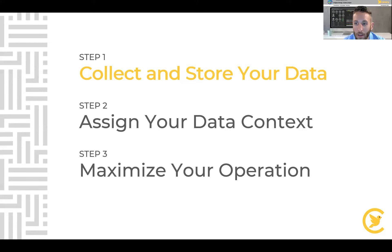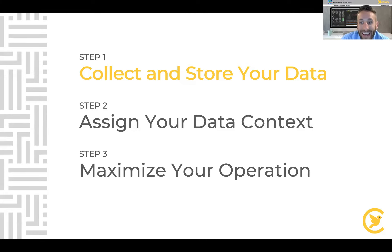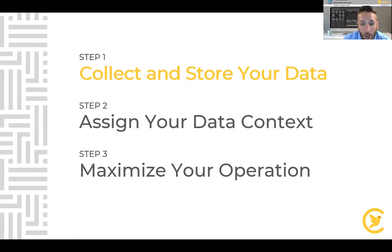Great job with the poll questions. For number one: if the network connection is interrupted, data will not be collected until the network connection is restored — that is actually false. The store-and-forward technology allows us to continue collecting data, and when the network connection is restored, it will be sent into the Historian. For number two, what makes up a tag? Nine of eleven were correct: timestamp, value, quality, and metadata properties. Great job.